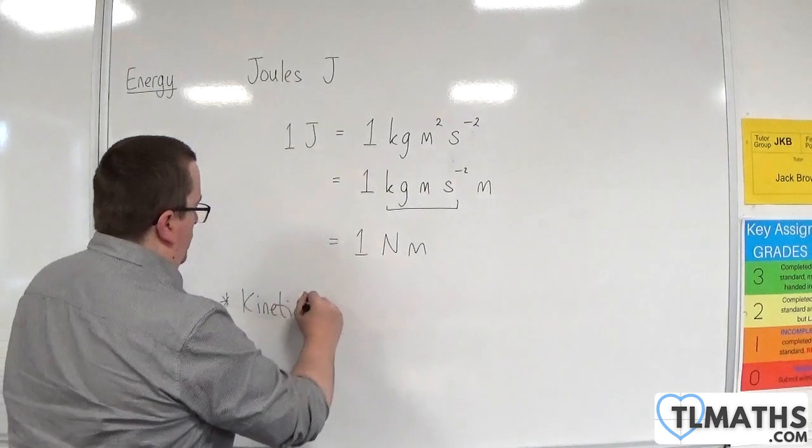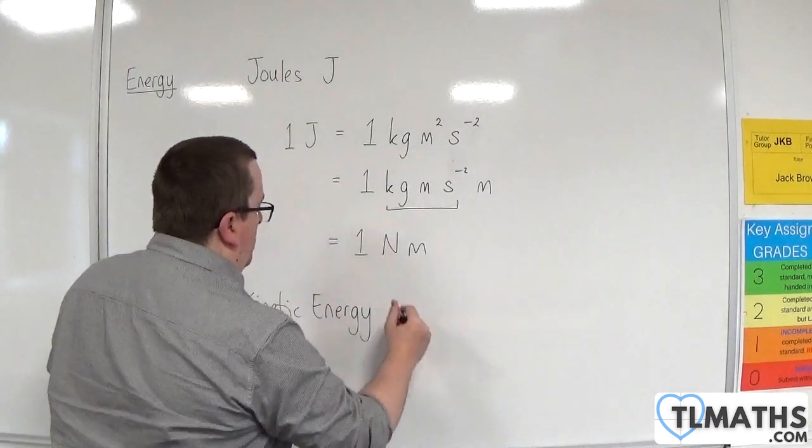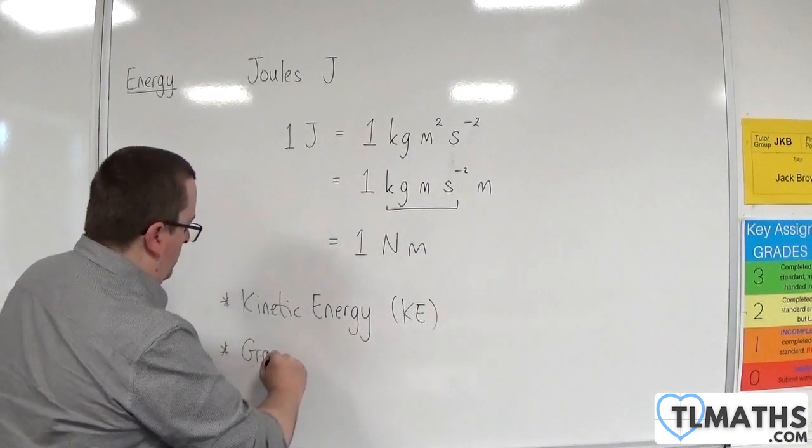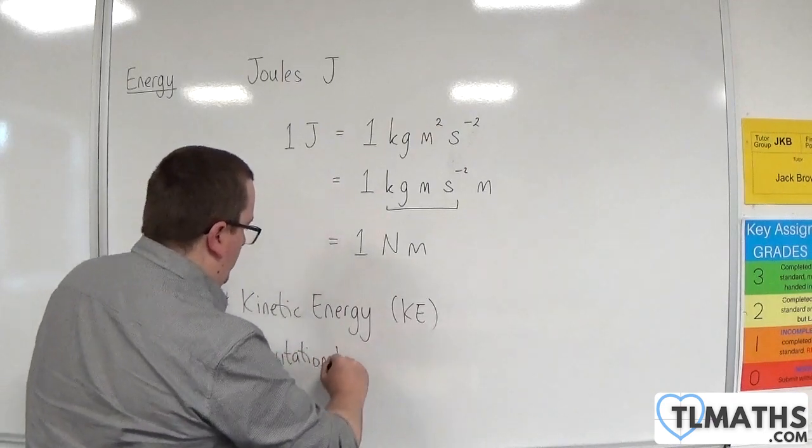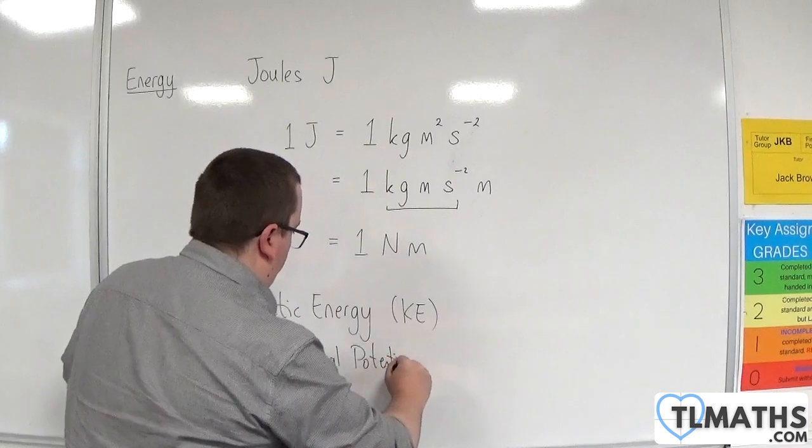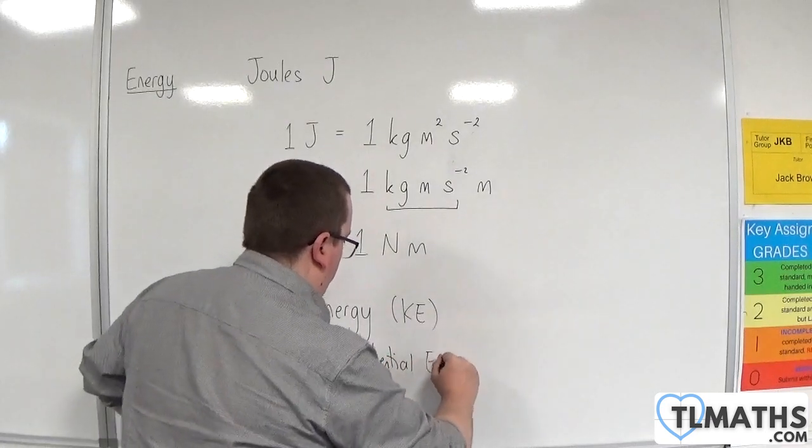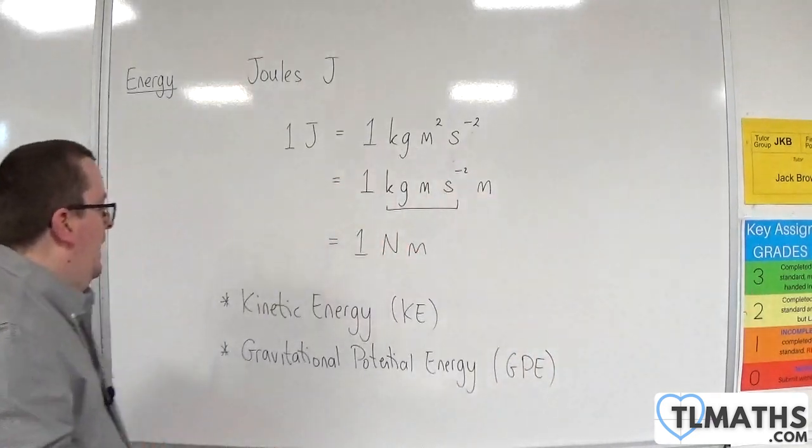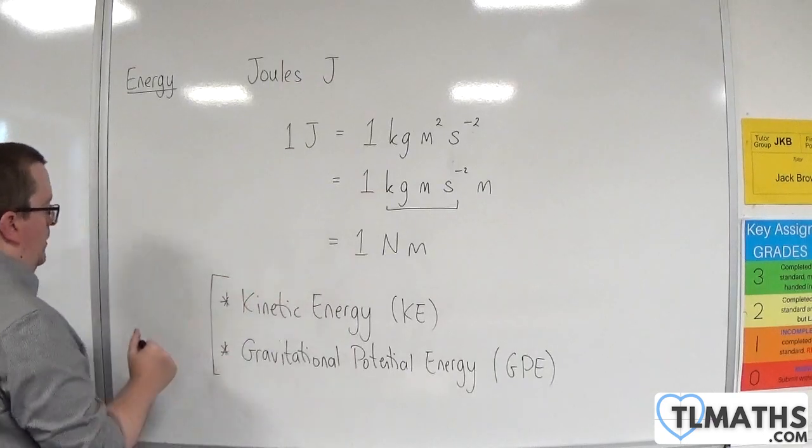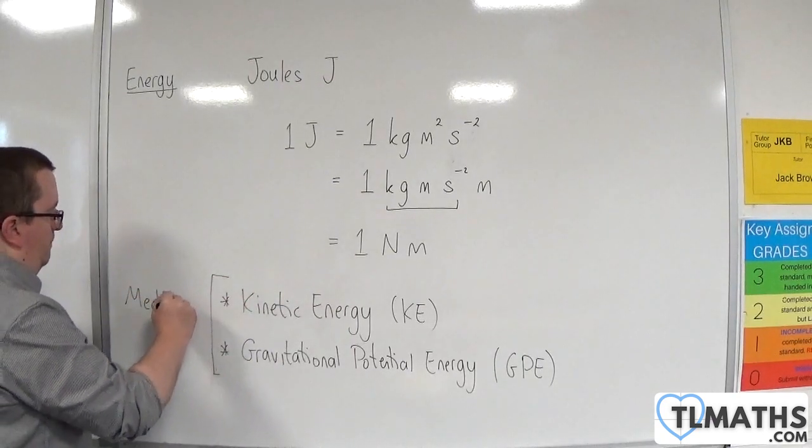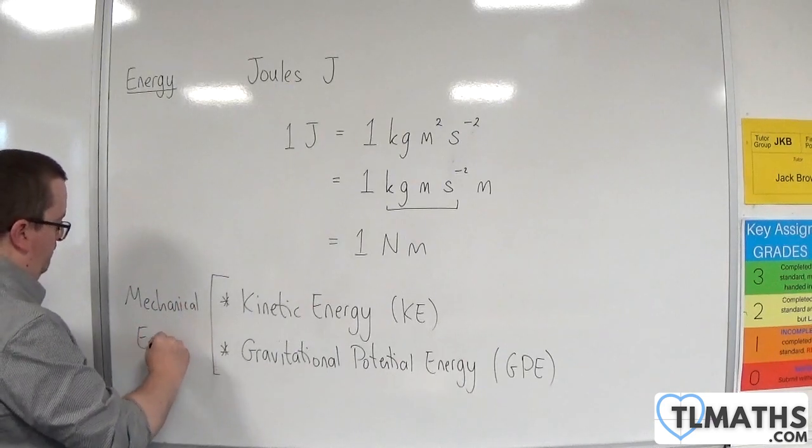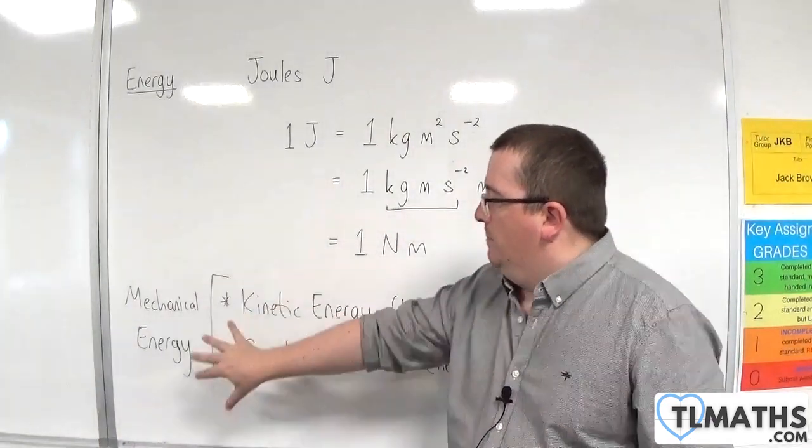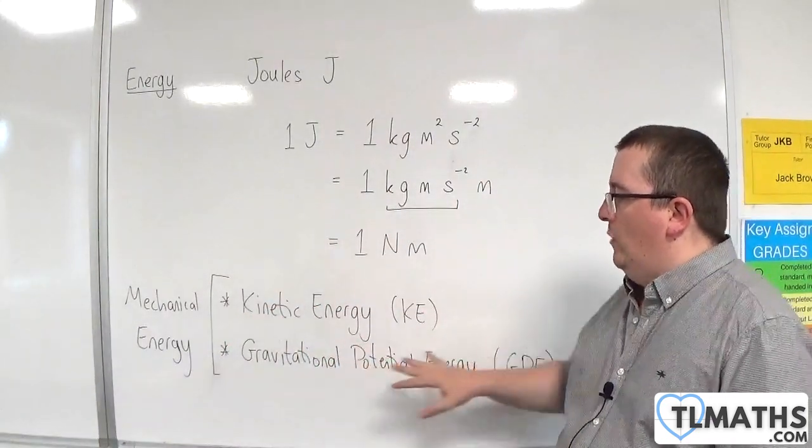Kinetic energy, often abbreviated to KE, and gravitational potential energy, often abbreviated to GPE. And together, they are referred to as mechanical energy. So mechanical energy combines kinetic energy and gravitational potential energy.